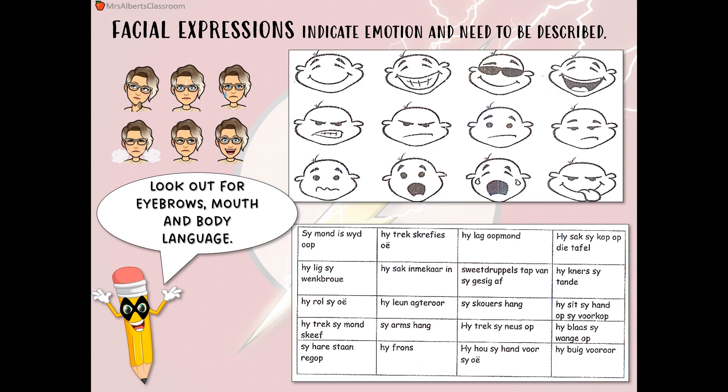You learn the word eyebrow, which is 'winkbrouwe', and 'mond'. You can say 'die mond is oop', you can say 'die oë is groot'. Learn these ones at the bottom that I've got for you here. Make sure that you are able to describe the facial expressions that you see.